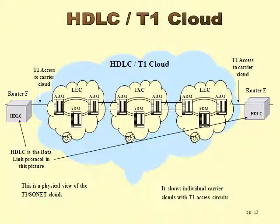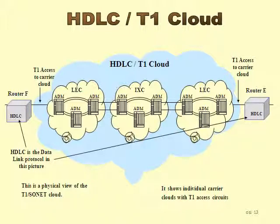We have two data link protocols in this case. The lower-level data link protocol is HDLC over that T1, which is 1.544 megabits. From router F to router E, you have the local exchange carrier, inter-exchange carriers, and then another local exchange carrier — all telephone companies. The protocols in this case are synchronous optical network protocols, and the devices are known as add-drop multiplexers. The data link protocol here is HDLC — high-level data link control. Basically, we have a wide area network link all the way from router F to E across a physical layer T1, but that T1 is carried inside of SONET by the carrier.